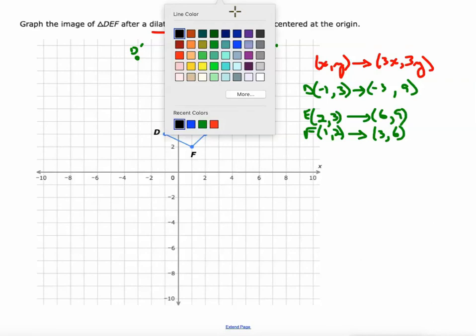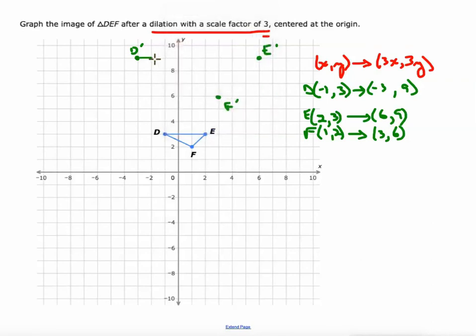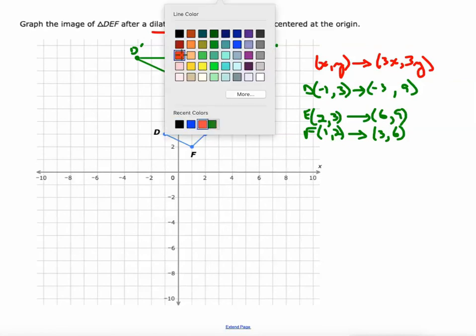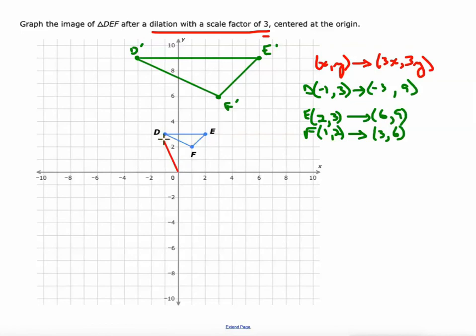Let's connect those points to create our new shape. And there's our new shape after the dilation by a scale factor of 3. And again, if we connect the origin and run a line straight through the vertex to the new vertex, you'll see that they all fall in a straight line.